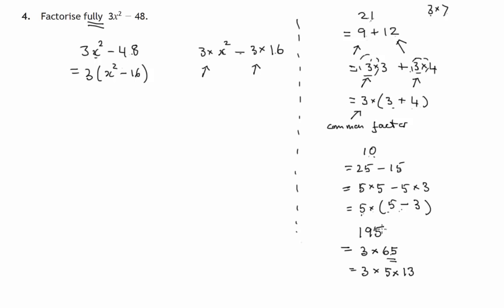However, that 65 has factors itself. It's a multiple of 5, so we can write it as 5 times 13. So if we were to factorize 195 and just leave it as 3 times 65, we haven't factorized it fully because this 65 has two factors of its own.